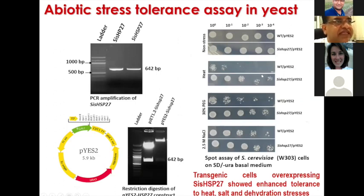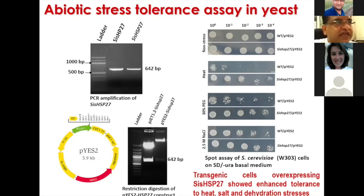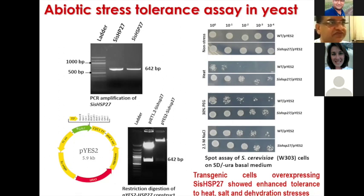You can see that transgenic yeast cells overexpressing HSP27 showed enhanced tolerance to heat, dehydration, and 2.5 molar NaCl. The overexpressing yeast cells are surviving very well when the wild type is dying. It shows that in a heterologous system, the gene from Foxtail millet is working quite well in yeast, though this is not conclusive proof.